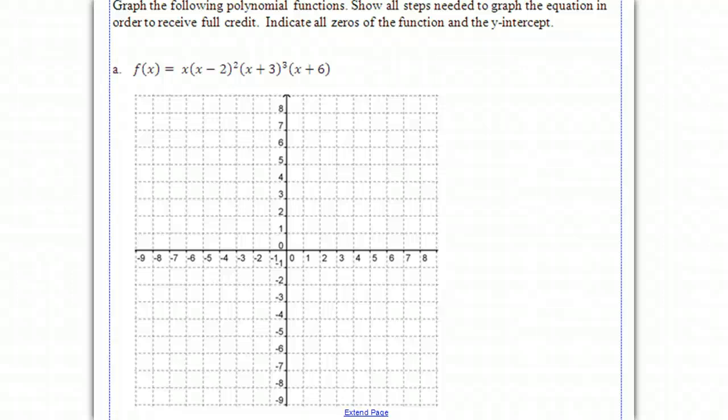Today we're going to learn how to graph a polynomial. The first step is to figure out what degree polynomial we have. Looking here, we have x to the first times (x - 2) squared. That will put us at 2 x's in there, so it'll be x times x times x.